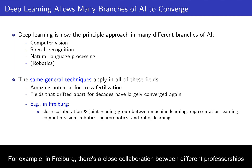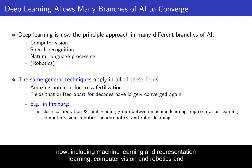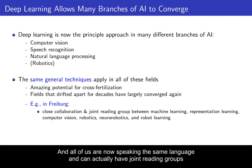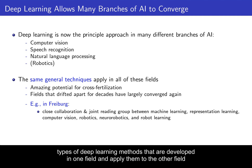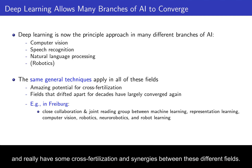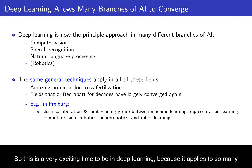For example, in Freiburg there is a close collaboration between different professorships, including machine learning, representation learning, computer vision, robotics, neural robotics, and robot learning. All of us are now speaking the same language and can have joint reading groups and collaborations. It's very easy to apply types of deep learning methods developed in one field to another field and have real cross-fertilization and synergies. So this is a very exciting time to be in deep learning because it applies to so many different problems.